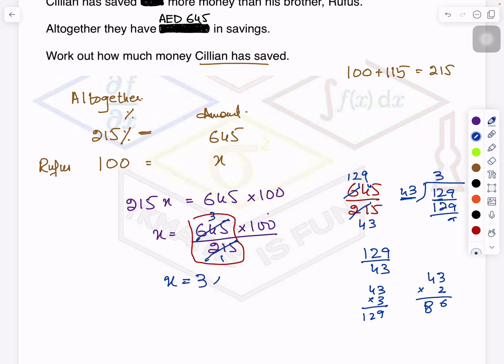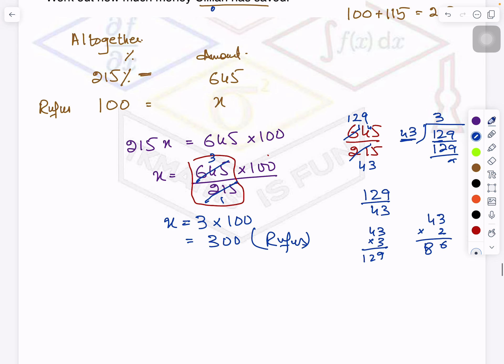So it is 129. So it means if I cancel it I will get here three straight away. So x equals three times 100, which is 300. Whose money is this? This is Rufus's money. But we have to find out Cillian's money, so what will I do? From the total money I will minus it. And total money was 645, so I'm minus 300 from here, so I will get 345. So I got Cillian's money, which is 345.